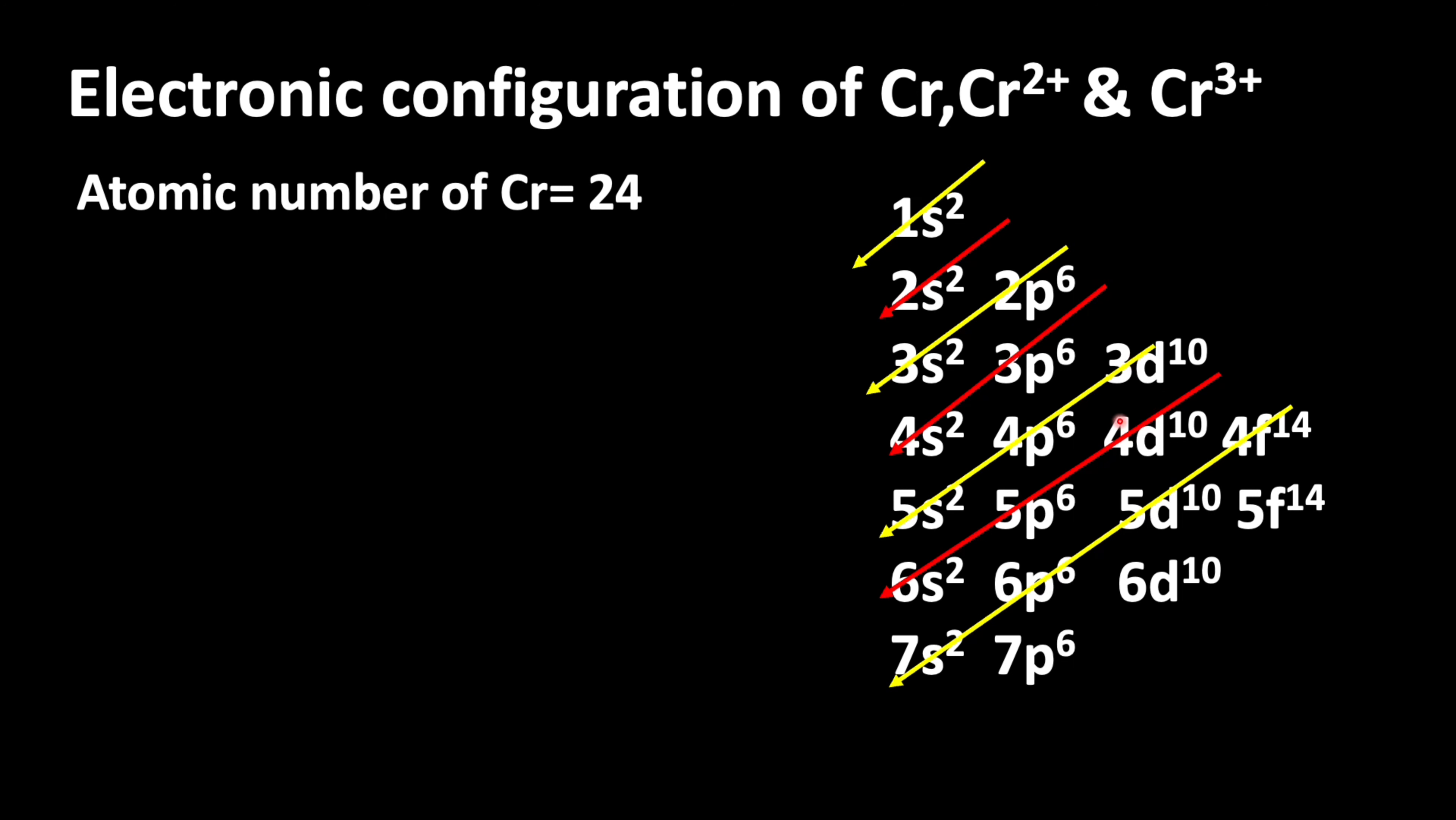The electronic configuration for chromium: 1s² 2s² 2p⁶ 3s² 3p⁶ 4s² 3d⁴. However, this is not the correct electronic configuration of chromium because half-filled and completely filled orbitals are more stable. To achieve a half-filled d orbital, the 3d needs one more electron.